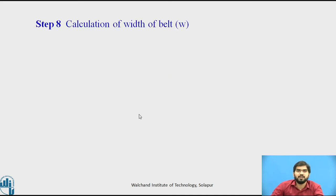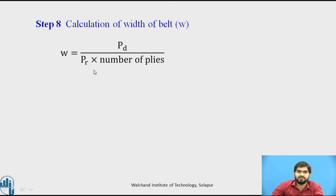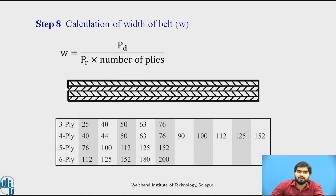Step number 8: calculate the width of the belt, denoted by w. w = pd / (pr × number of plies). This gives you the total width. For selecting the total width, you must know how many plies are required. For example, 4 plies may be used. Check whether the width is available for the selected number of plies, and select the number of plies accordingly based on availability of that width.